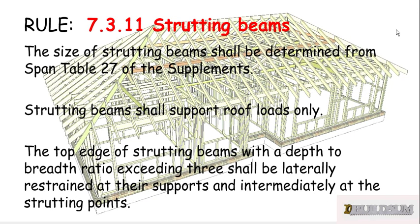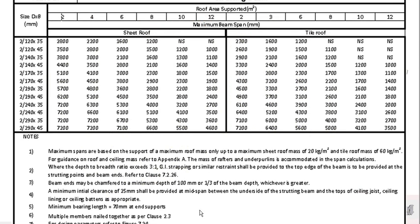Rule 7.3.11 says that strutting beams shall be determined from Table 27. Where the top edge of a strutting beam has a depth-to-breadth ratio exceeding 3, it shall be laterally restrained — to stop them from falling over — the same as what we did for hanging beams.